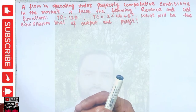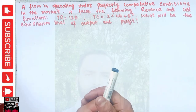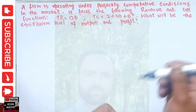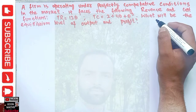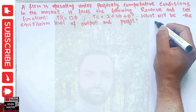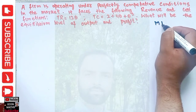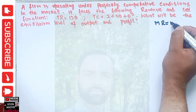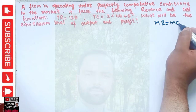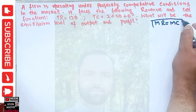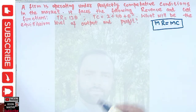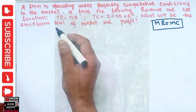For equilibrium, we know that marginal revenue should be equal to marginal cost. This is the profit-maximizing condition in the case of perfect competition.